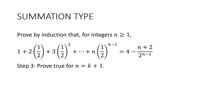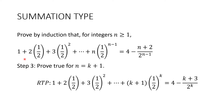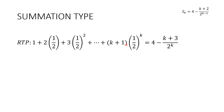Step three: prove true for n equals k plus one. I always like to start with a required to prove — that's where I substitute in the k plus one into the expression. So the sum up to and including the k plus one term, I want to prove that it's equal to four take away k plus three divided by two to the k. With mathematical induction, we've got to try and link the thing we're trying to prove — the sum of k plus one terms — to our assumption, which is the sum of k terms. The sum of k plus one terms equals the sum of k terms plus the k plus one term.